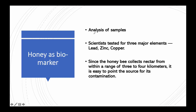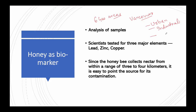To see how honey can be used as a biomarker, honey samples were analyzed for the study — they were collected from six different geographical areas within Vancouver, Canada. These areas included urban areas, industrial areas, residential areas, and agricultural areas. Scientists then tested the samples for three major elements: lead, zinc, and copper.